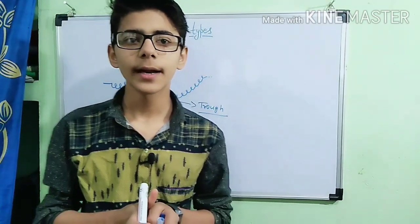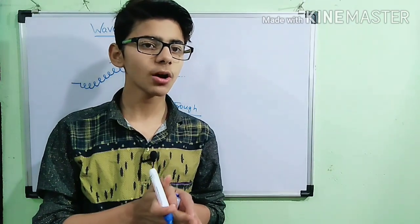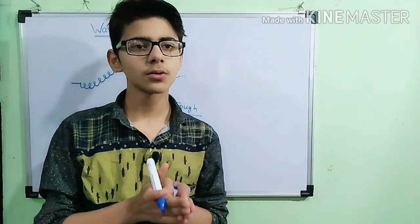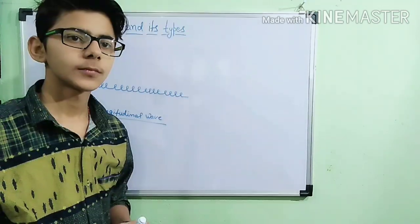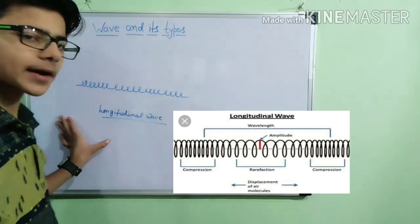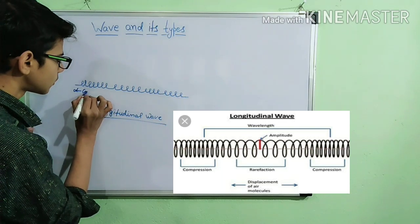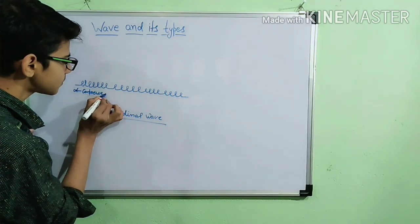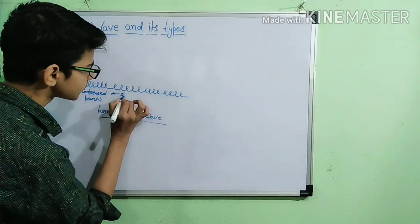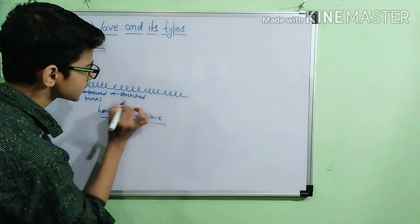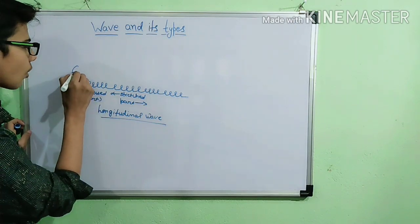The definition of longitudinal wave: if the particles of the medium execute vibration parallel to the direction of propagation of the wave, it is known as a longitudinal wave. Looking at the rough diagram of a longitudinal wave, we can see the compressed part, which is known as compression, and the stretched part.